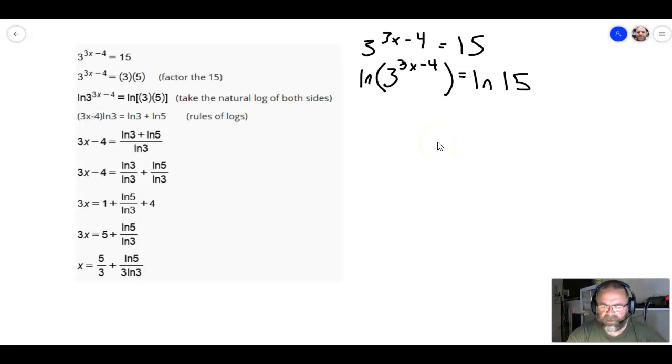Then you can do the natural log of 3 to the 3x minus 4 and this would be equal to the natural log of 15. So, take the natural log of both sides. And the reason that we do that is because the logarithms have a special property that allows us to take the exponent and to bring it out front as a product. So, we're going to take that whole exponent and bring it out front.